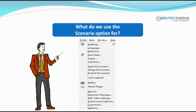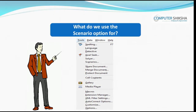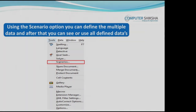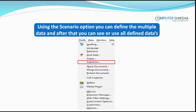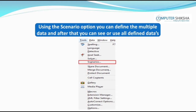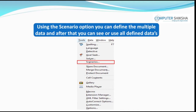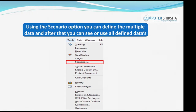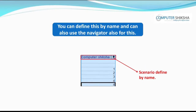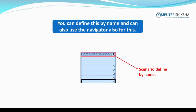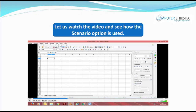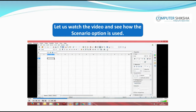What do we use the scenario option for? After typing a value for a row or column, if you need to give it a different value and want to see what the original value was versus the current value, you will use the scenario option. You can define this by name and use the navigator. Let us watch the video and see how the scenario option is used.